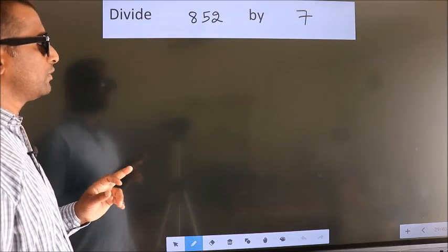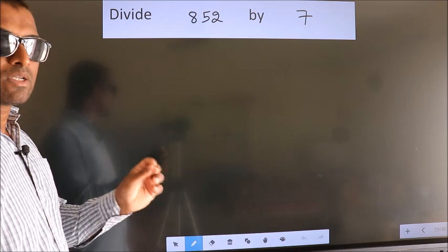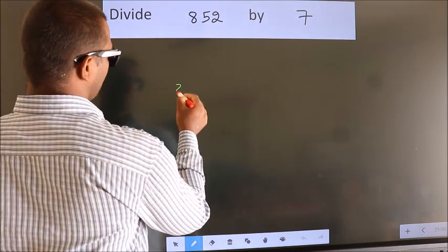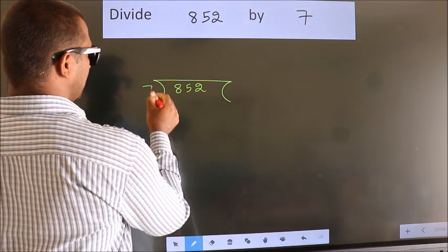Divide 852 by 7. To do this division, we should frame it in this way. 852 here, 7 here.